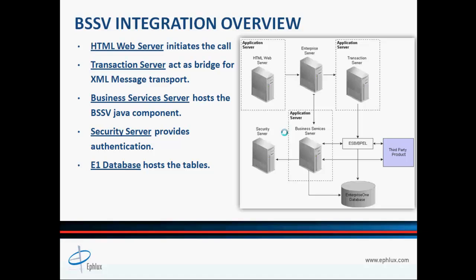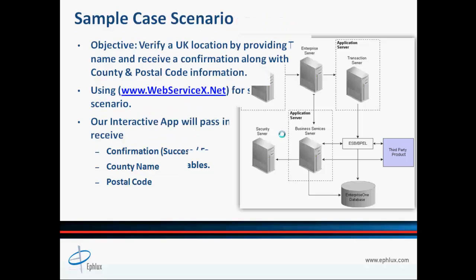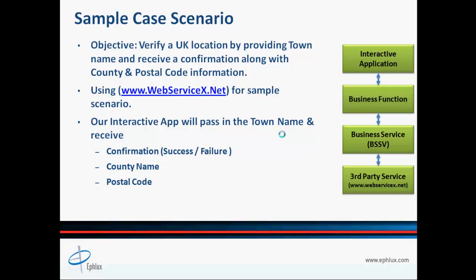Starting with the overview, you can see a diagram describing a typical scenario for JD Edwards business service integration. It provides all the elements of the puzzle and how they fit together. It usually starts with the HTML web server where a call is initiated from an interactive app. This call invokes a business function through the enterprise server, which communicates to a business service through XML message transport using the transaction server. The business service resides on a business services server and connects with an external third-party service provider using Oracle Enterprise Service Bus or BPEL. Once data is received, the business service returns data back to the business function through XML, and the business function returns it to the interactive app. The security server provides all required authentication, while the EnterpriseOne database serves as the hosting ground for all JDE tables.